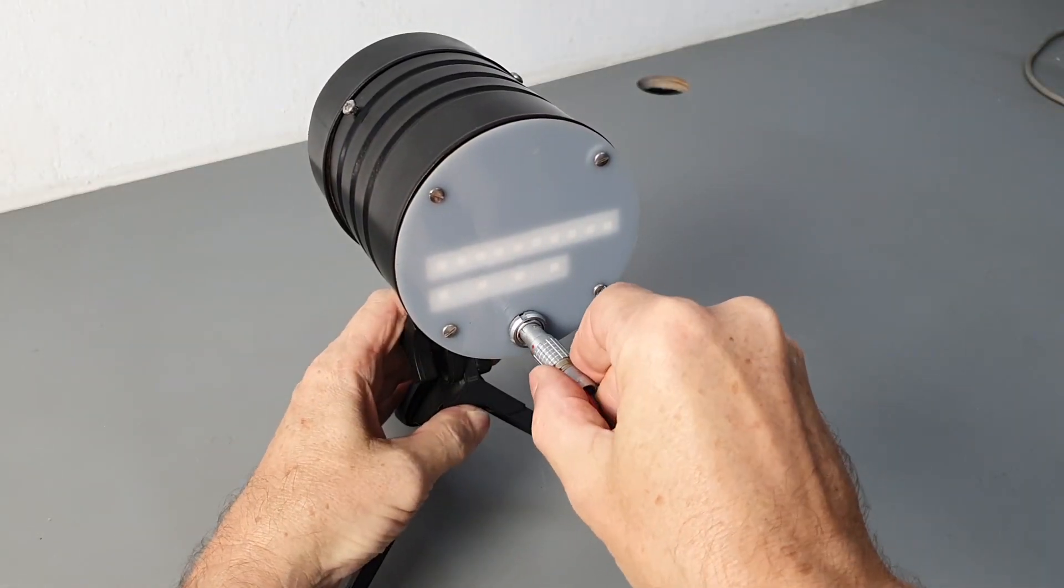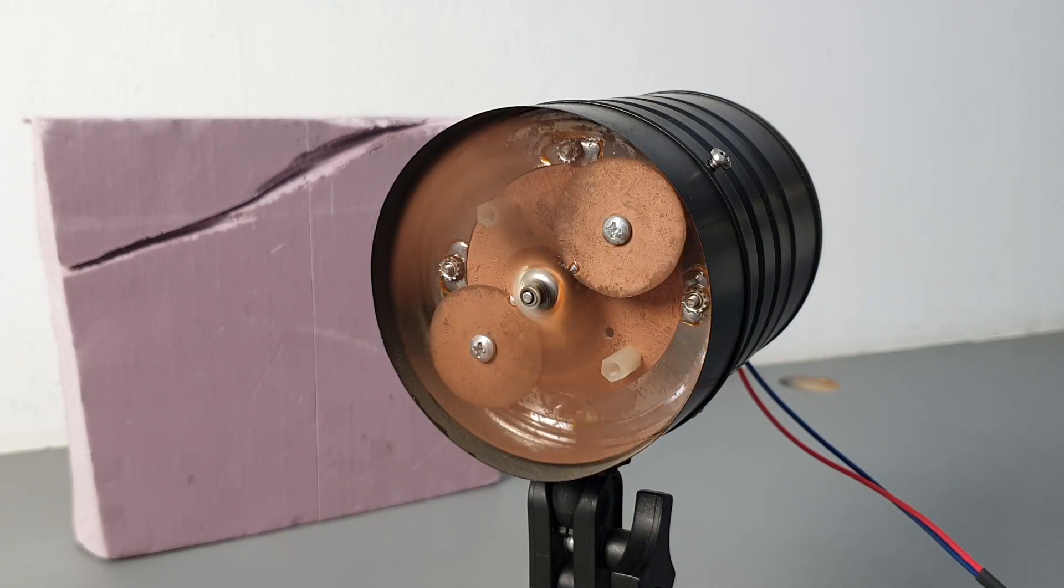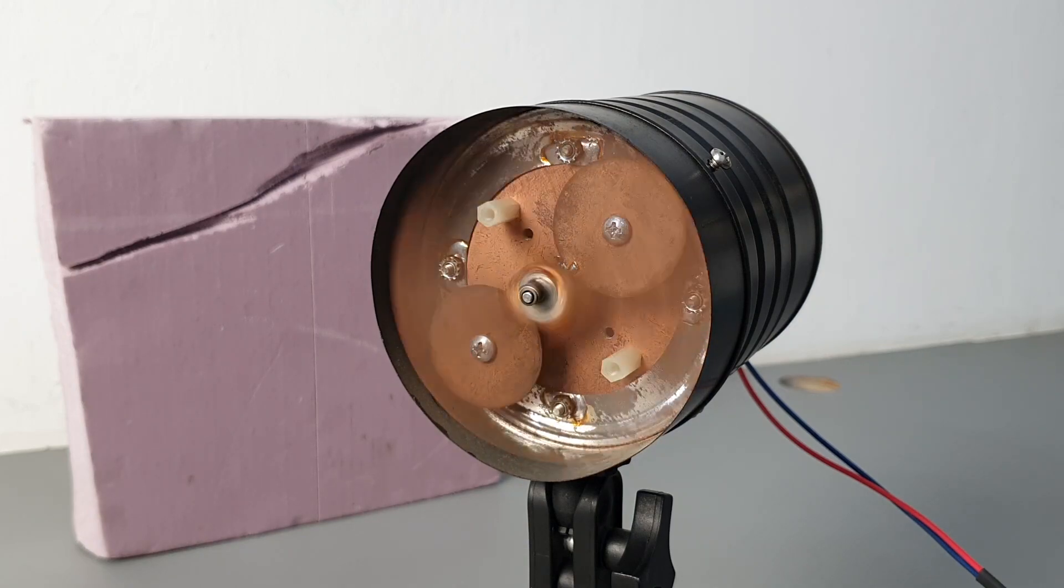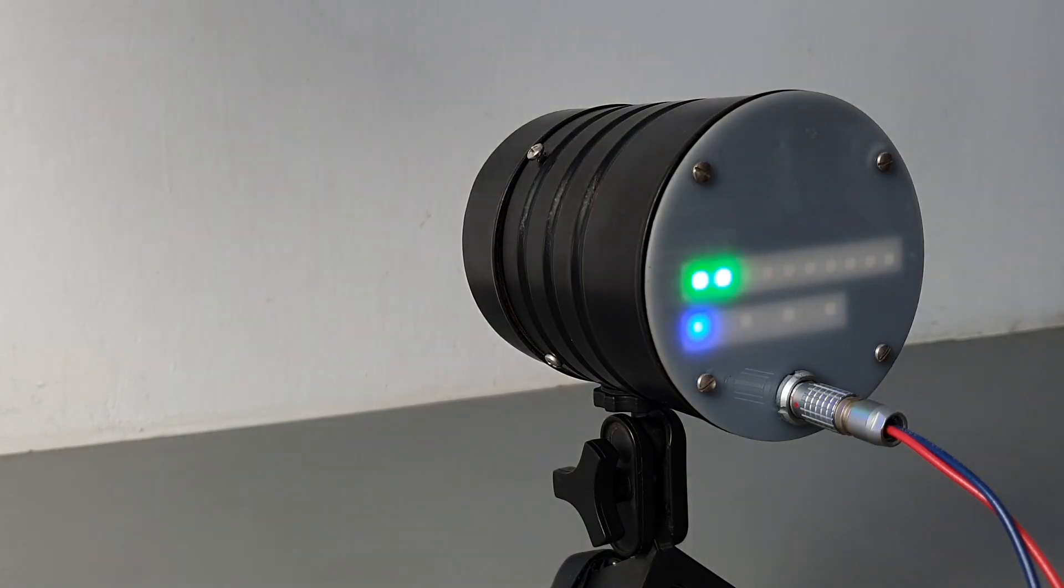Plugging the unit into 12 volts starts the motor turning. It spins about 2,200 rpm in front of the sensing electrodes. The display reads in kilovolts per meter and auto ranges over three decades.